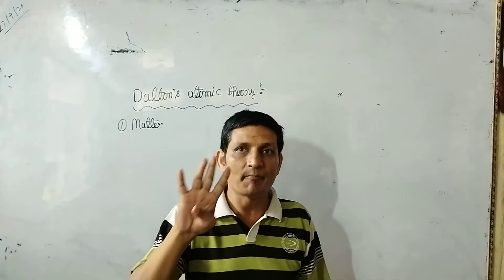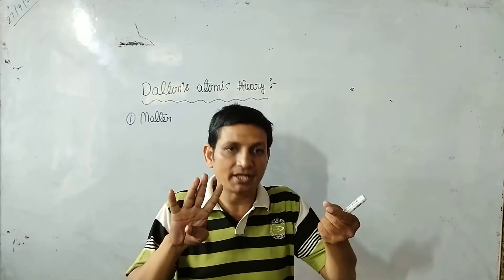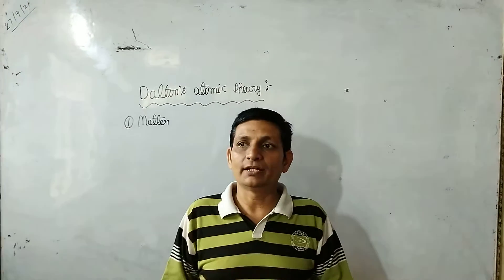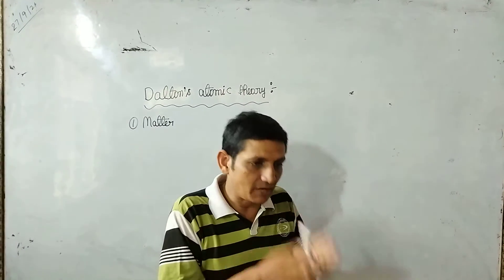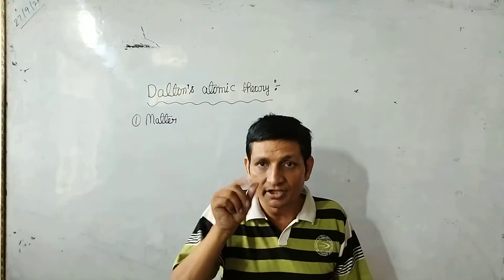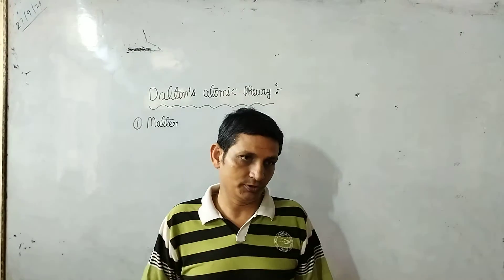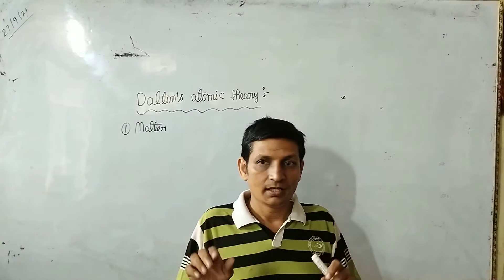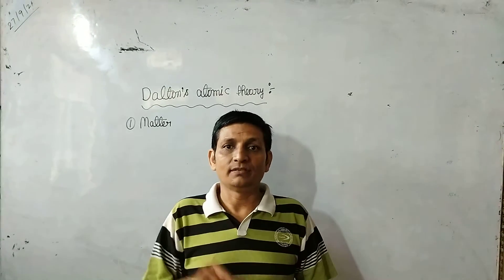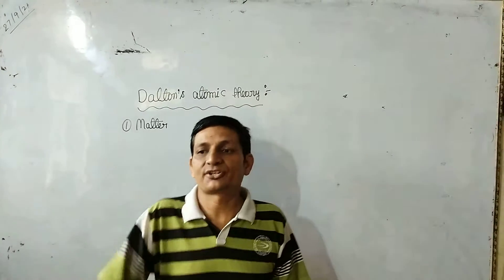Number four: atoms of an element combine. Number five: atoms of one element combine with the atoms of another element in a fixed ratio to form molecules of a compound. Number six: the atom is the smallest unit that takes part in a chemical reaction.